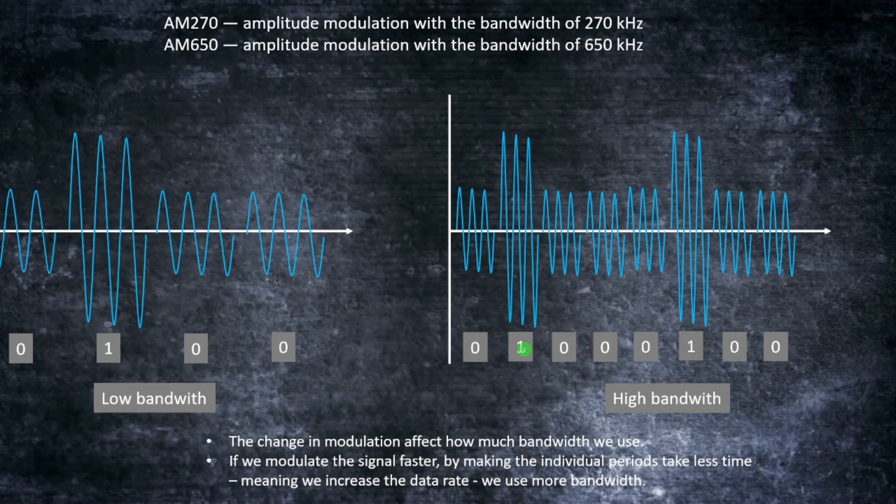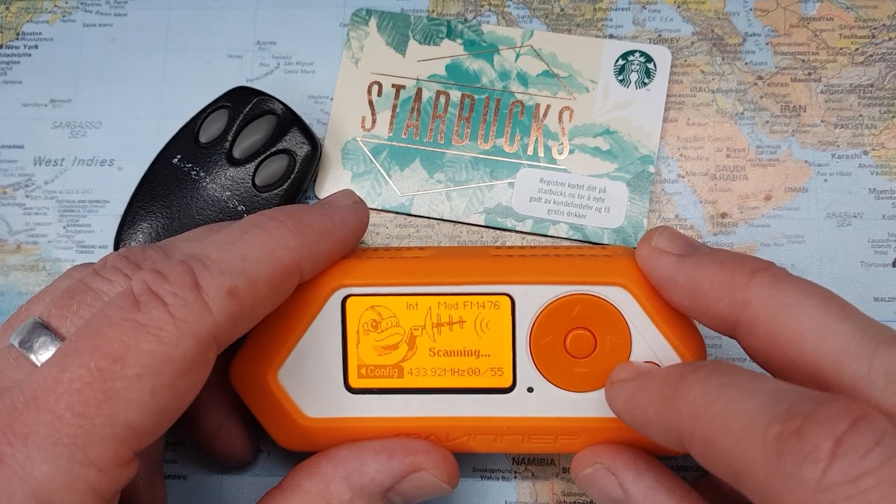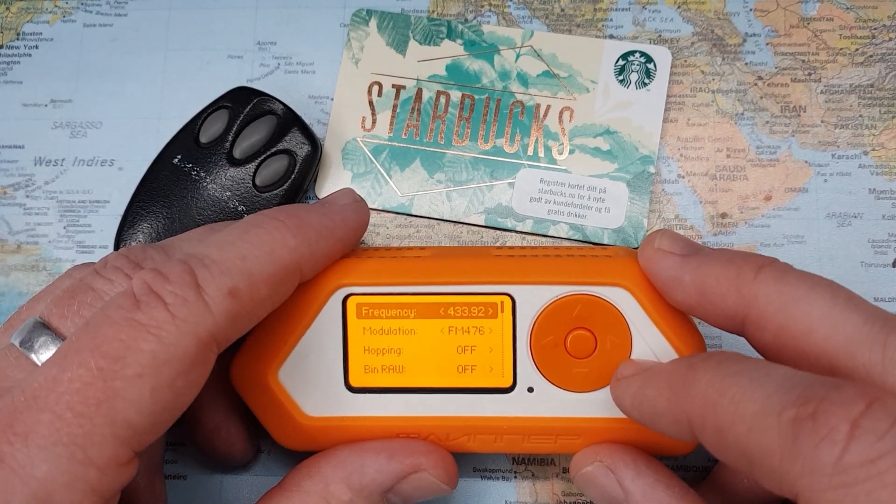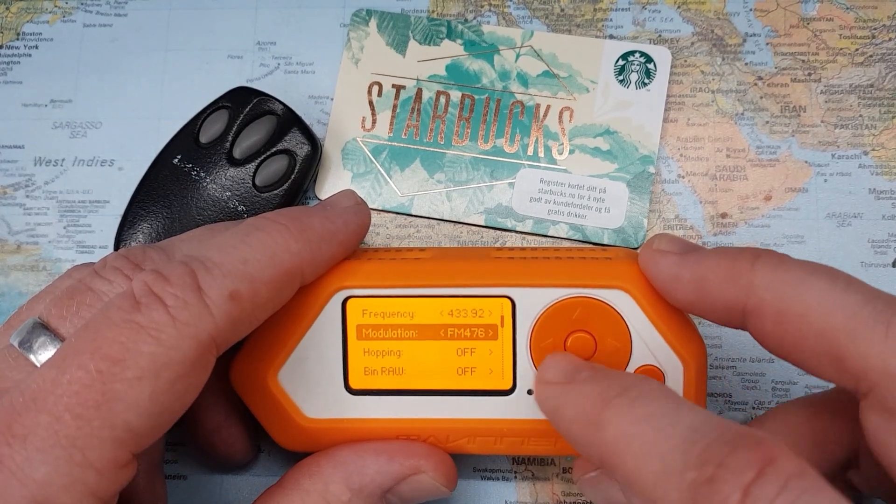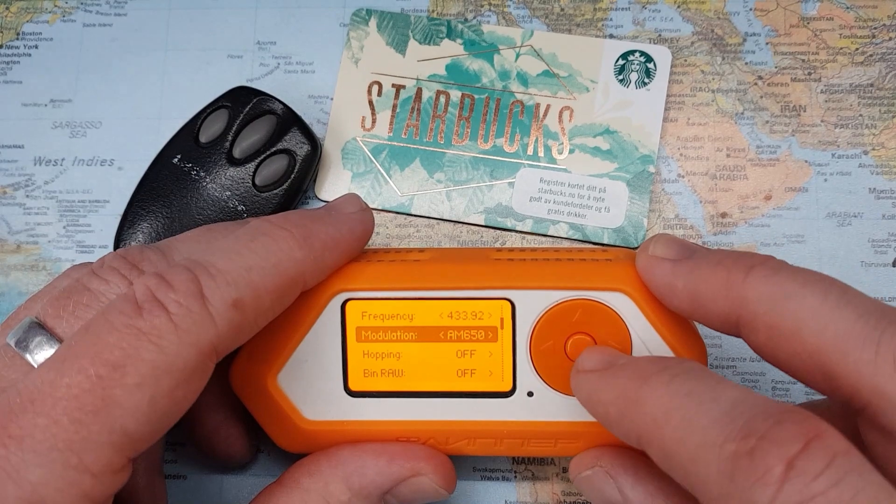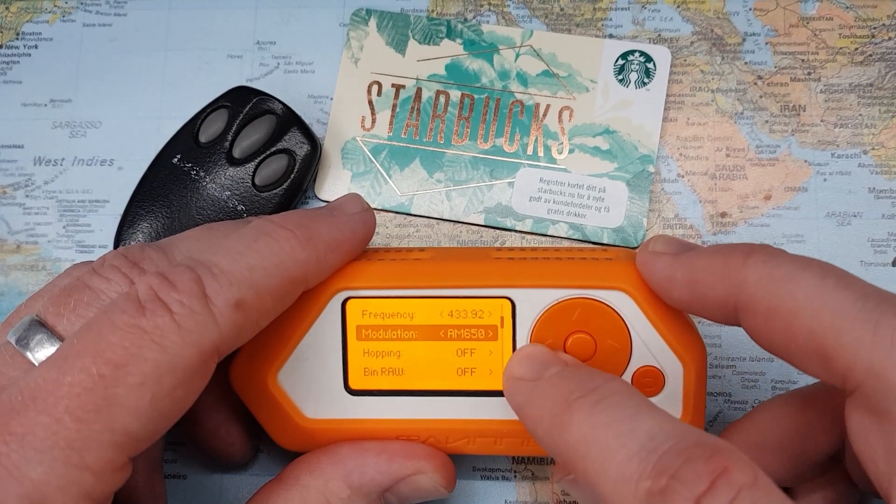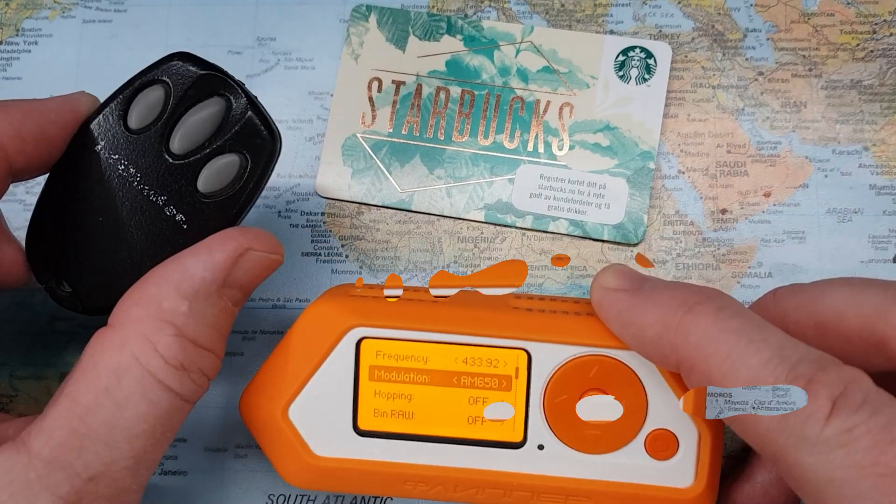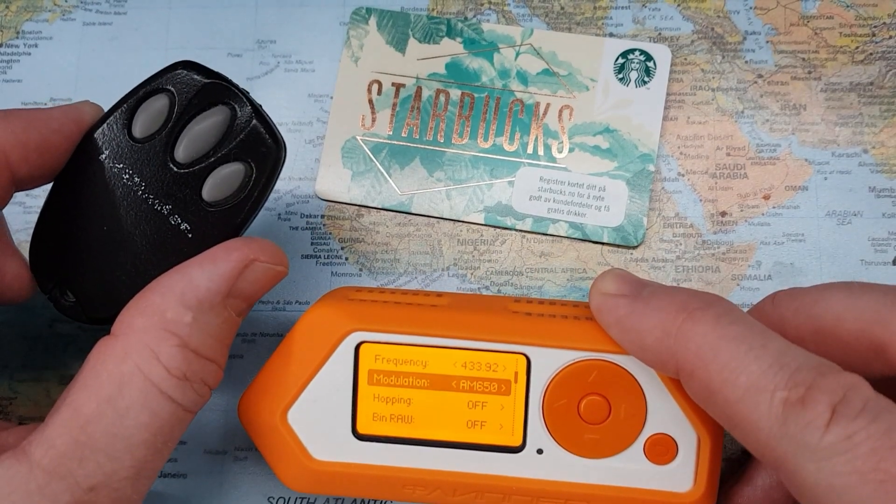So if you are modulating faster by making the individual periods take less time, we can increase the data rate and use more bandwidth. This means that when you are reading a signal, you will have to select the correct frequency but also know about the modulation, because you can select frequency modulation or amplitude modulation as we just saw, and also the different bandwidth between 270 or 650.